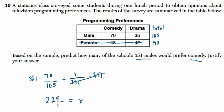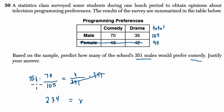I'll just show this work, and you can explain that we use our sample — 70 out of 105 — which gives us a percentage, to then multiply by 351. And that tells us, out of the total male population, based on that same percentage of 70 over 105, how many would prefer comedy.